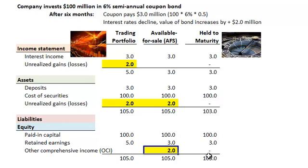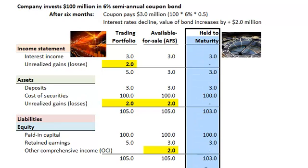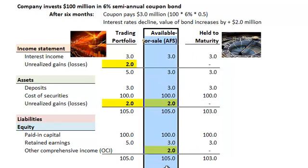Finally, held to maturity is straightforward: the unrealized gain of $2 million is nowhere to be found. It is not recognized on the income statement, nor does it grow assets, nor does it contribute to retained earnings or other comprehensive income. That unrealized gain does not show up on the financial statements at all. So those are the three classifications — available for sale is generally the default assumption. This is David Harper of the Bionic Turtle. Thanks for your time.